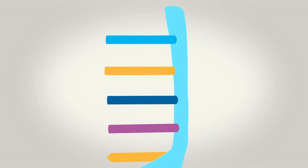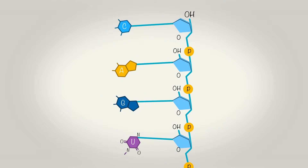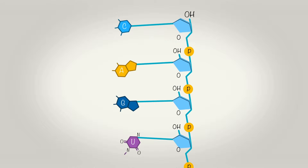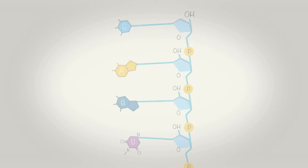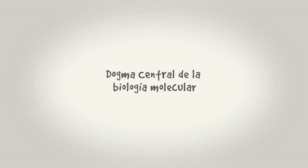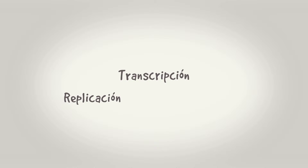De esta condición derivan los nombres de estas dos moléculas. La expresión del mensaje genético a través del ADN y ARN, junto con las proteínas, forman una red de vías metabólicas en la célula, conocida como el dogma central de la biología molecular, el cual consta de tres procesos: replicación, transcripción y traducción.